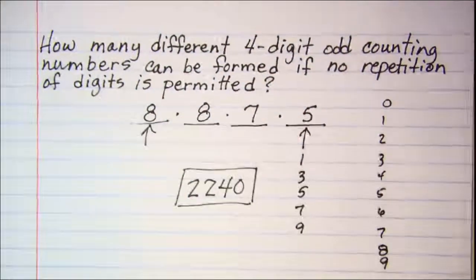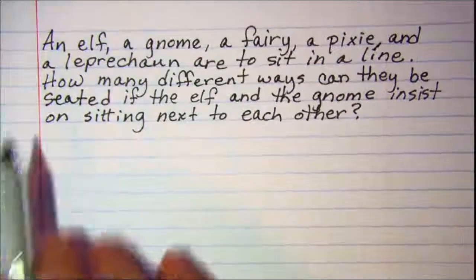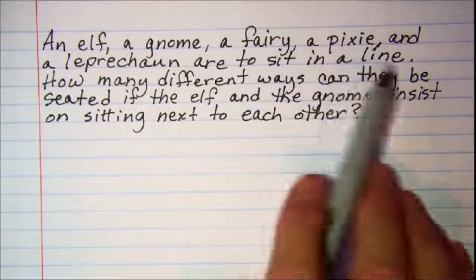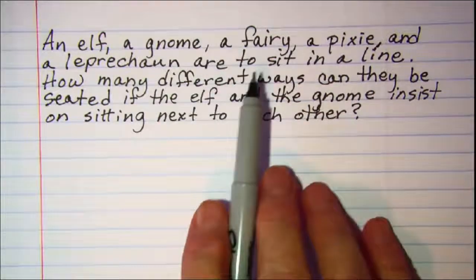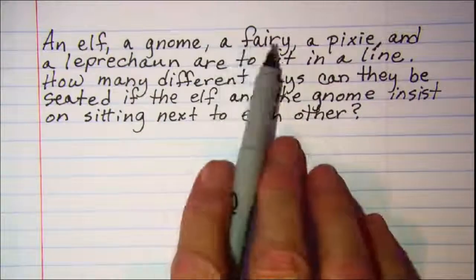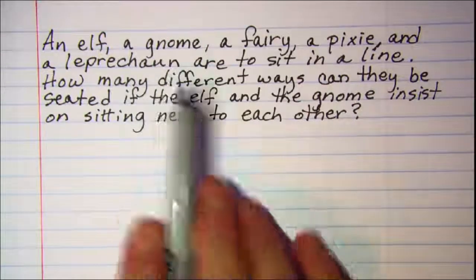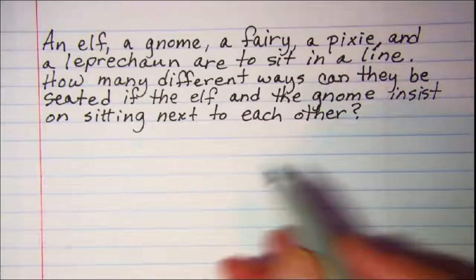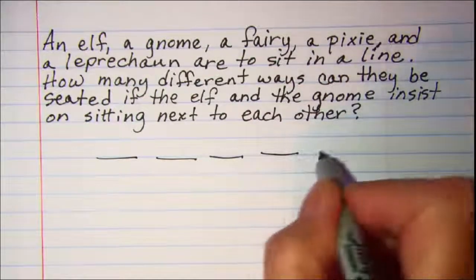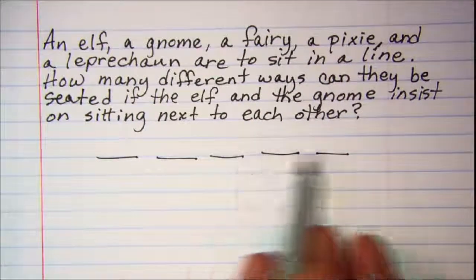Let's do one more. Alright, we have an elf, a gnome, a fairy, a pixie, and a leprechaun are to sit in a line. So there's one, two, three, four, five. Okay, so that's their seats.